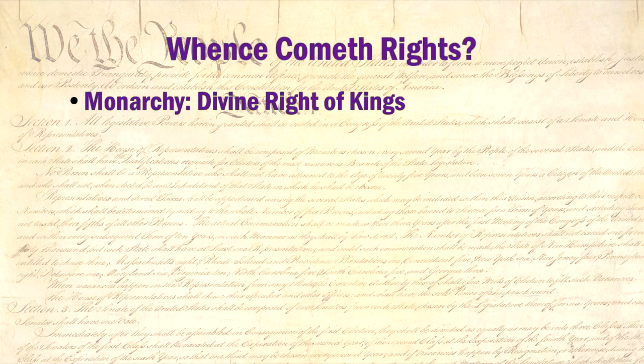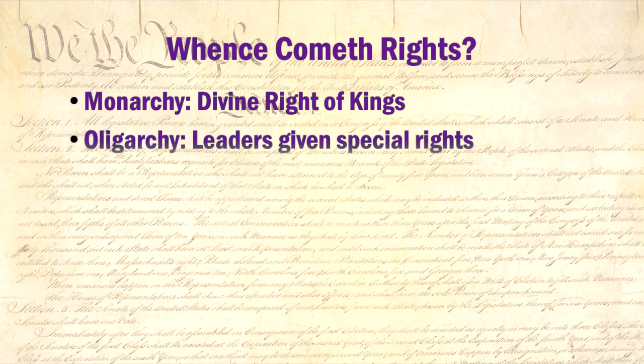In an oligarchy, it's the leaders — whomever the ruling class is — who are granted the rights, again usually by God. The idea is that the ruling class rules by God's divine will, and so everything they do is God's will and cannot be countermanded. The evidence for this is the fact that God would not have placed them in power if he did not want them to have it. Therefore, shut up and do as we say.